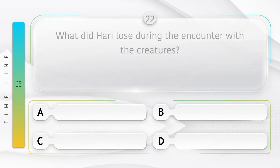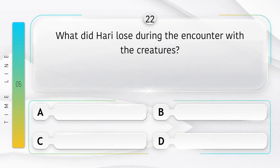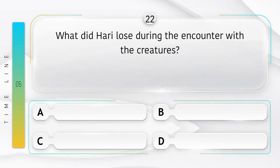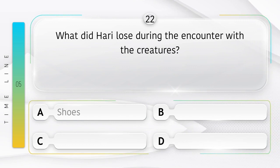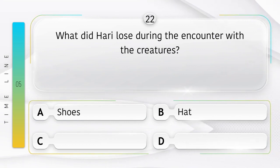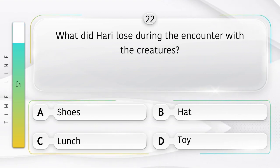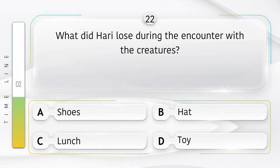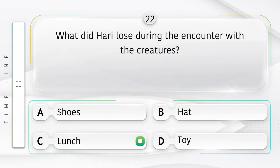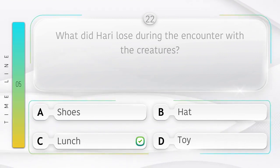What did Hari lose during the encounter with the creatures? Praniyo se mutbher ke dauran Hari ne kya khuya? Option is A. Shoes. B. Hat. C. Lunch. D. Toy. Answer is option C.